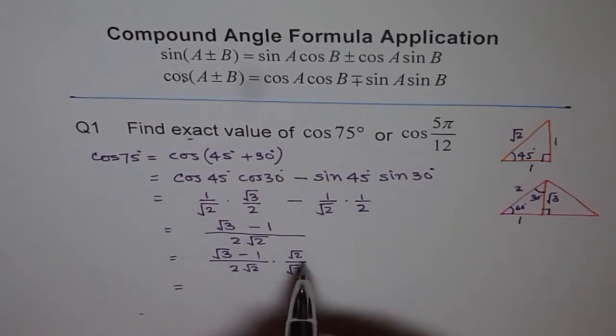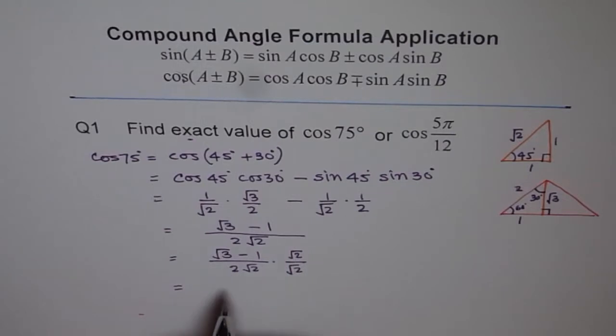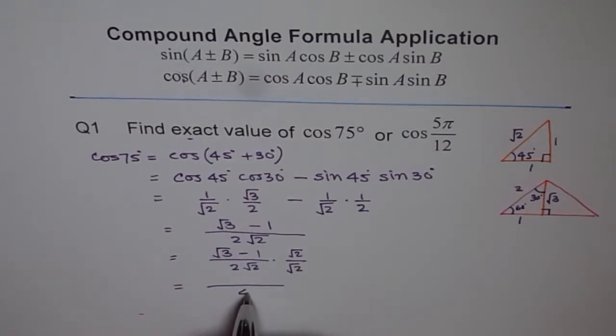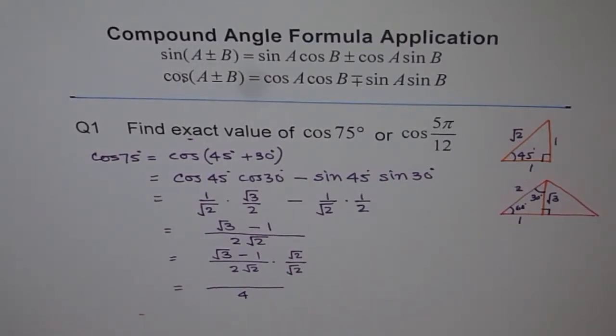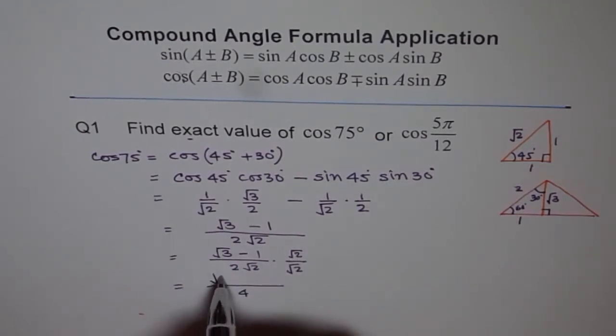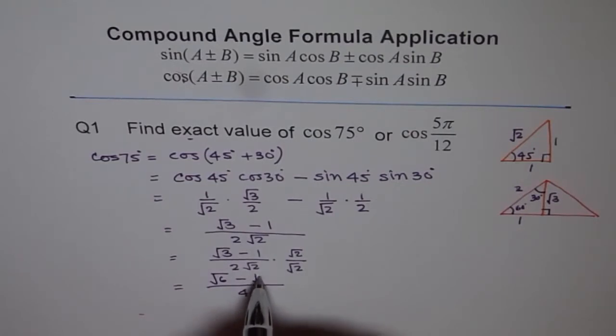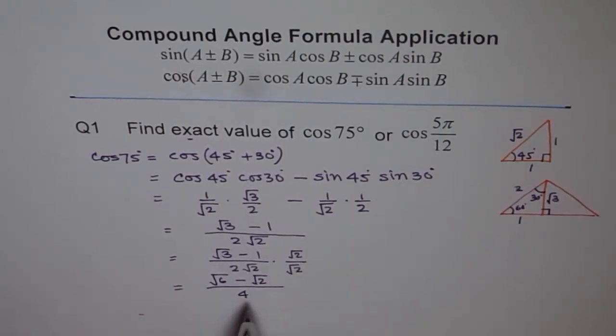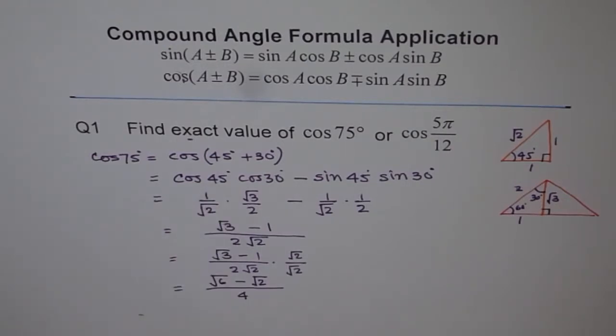If I do that, then I get what? √2 times 2 is 2 and 2 times 2 is 4. So, I get 4 in the denominator. And the numerator gives me 2 times √3 which is √6 minus √2. So, that is my numerator and that is my final answer for this question, right?